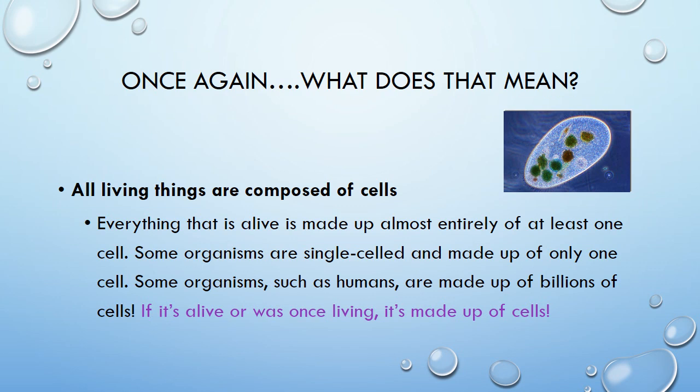All living things are composed of cells. That means everything alive is made up entirely — or almost entirely — of at least one cell. Some organisms are single-celled, called unicellular organisms, made up of only one cell. There's a picture of one on your screen. Other organisms, like humans, are made up of billions of cells. So if something is alive or was once living, it is made up of cells.